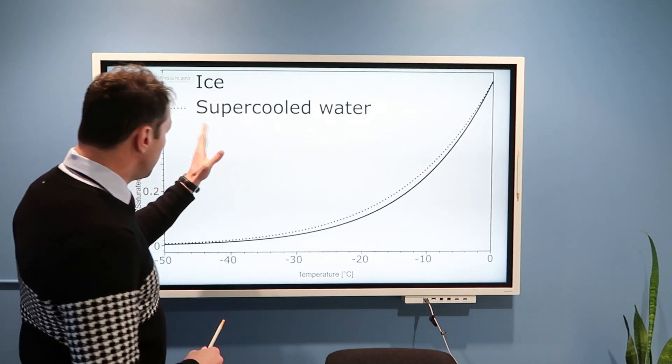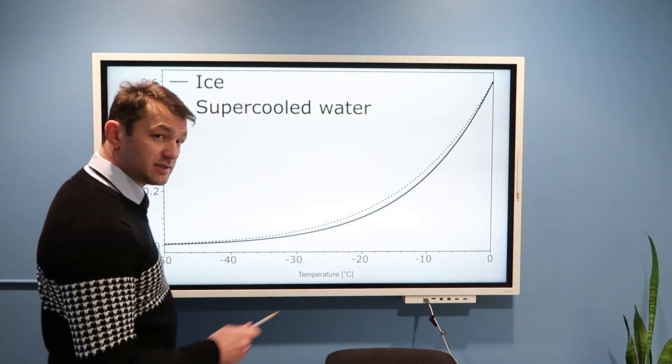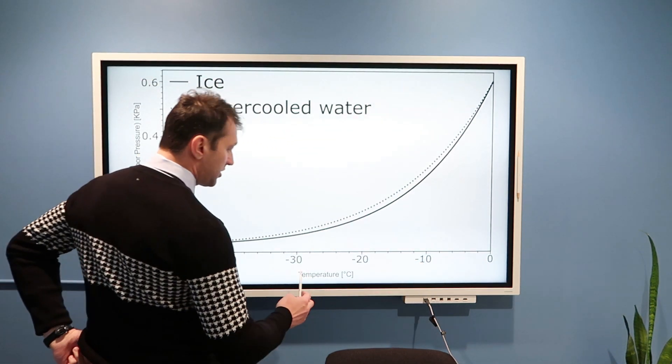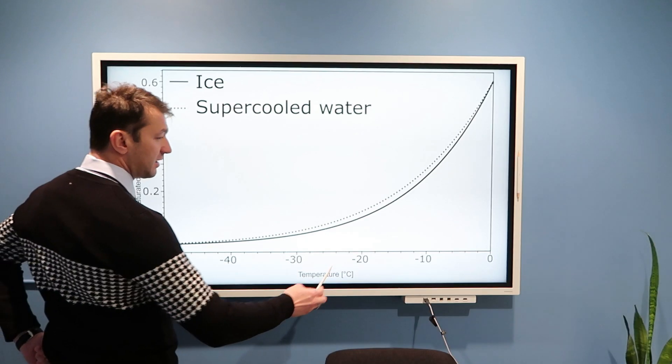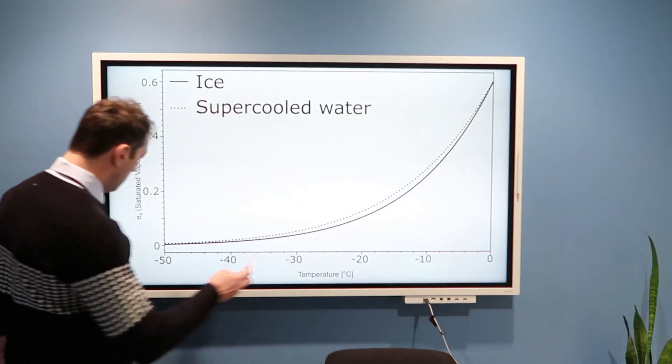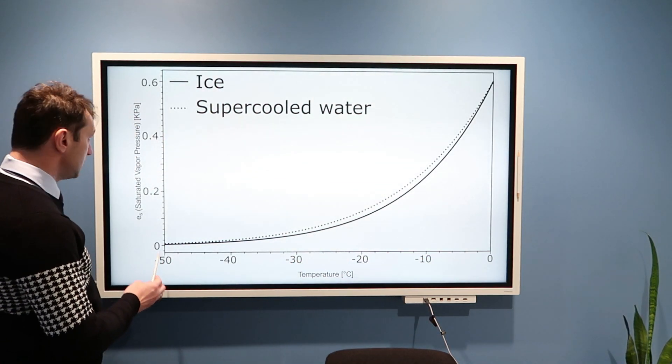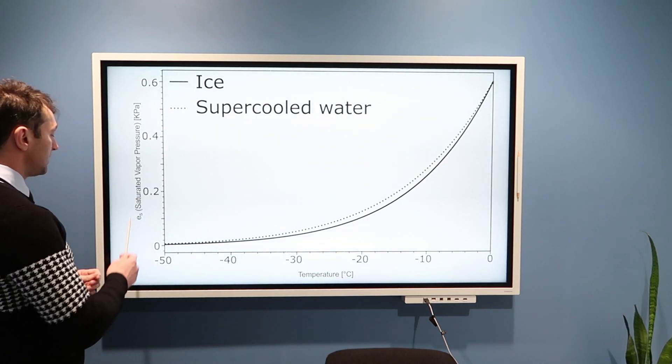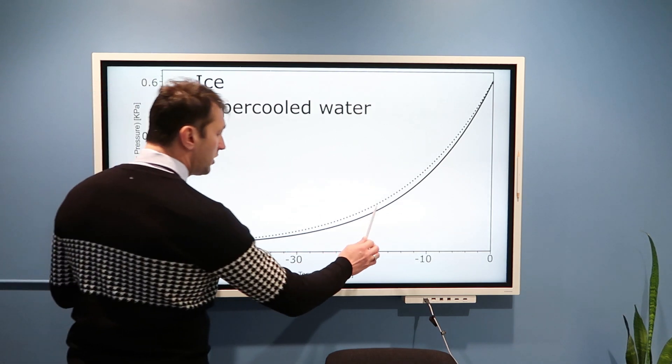Finally, let's discuss this business of ice that I mentioned at the beginning of this video. Here is temperature again, and all temperatures are negative. So, from zero all the way to negative 50 degrees Celsius. And y-axis is, once again, saturation vapor pressure. We have two curves.